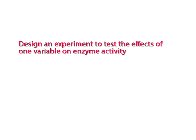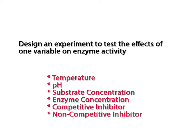Part two is much more involved and requires students to pick one variable that will affect the rate of enzyme activity, such as temperature, pH, a competitive inhibitor, etc.